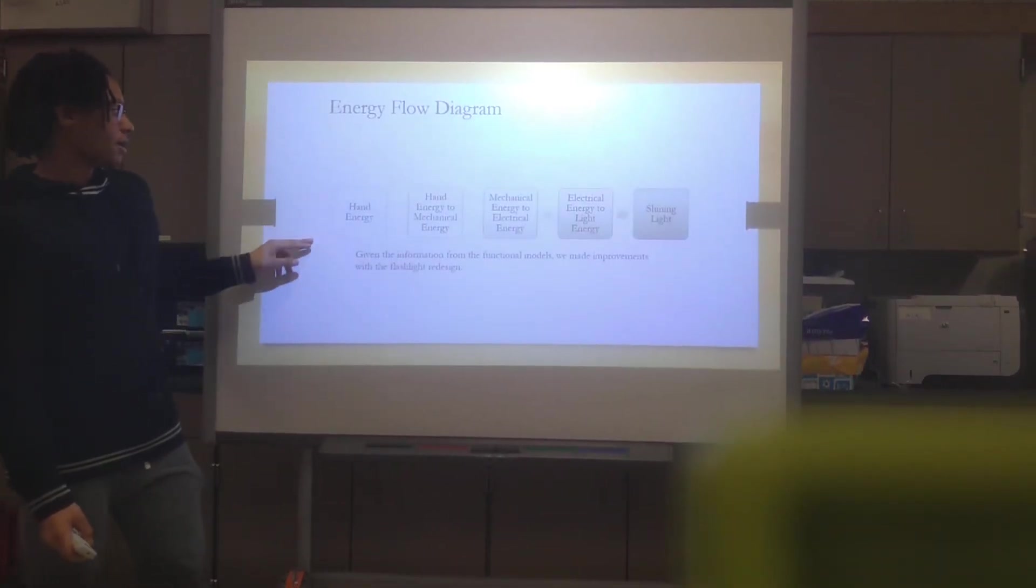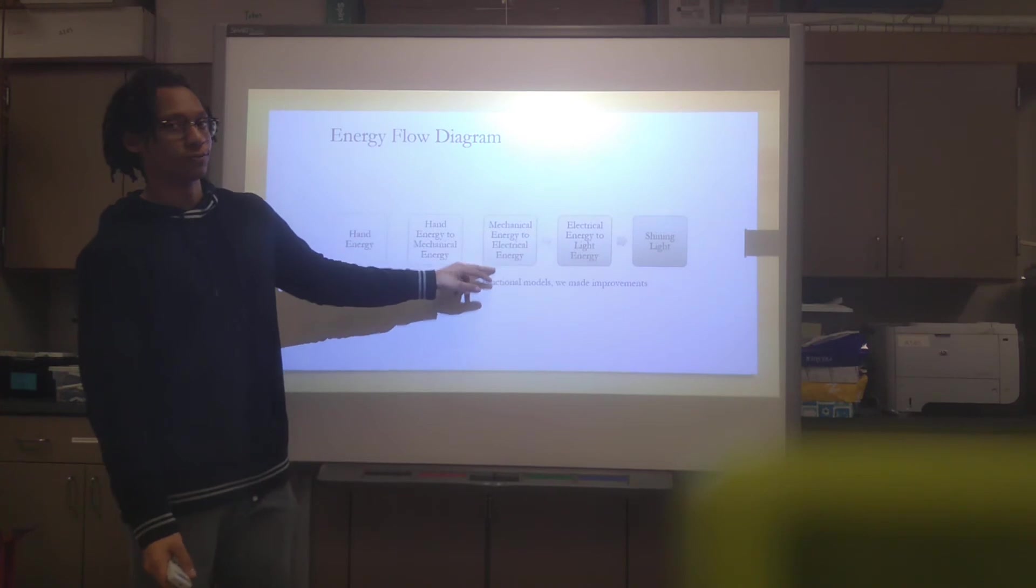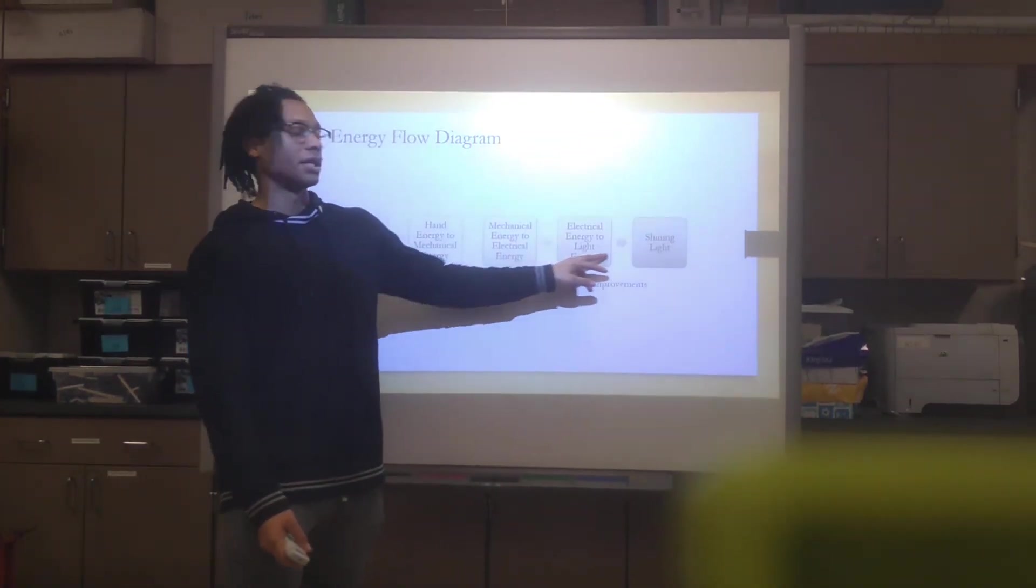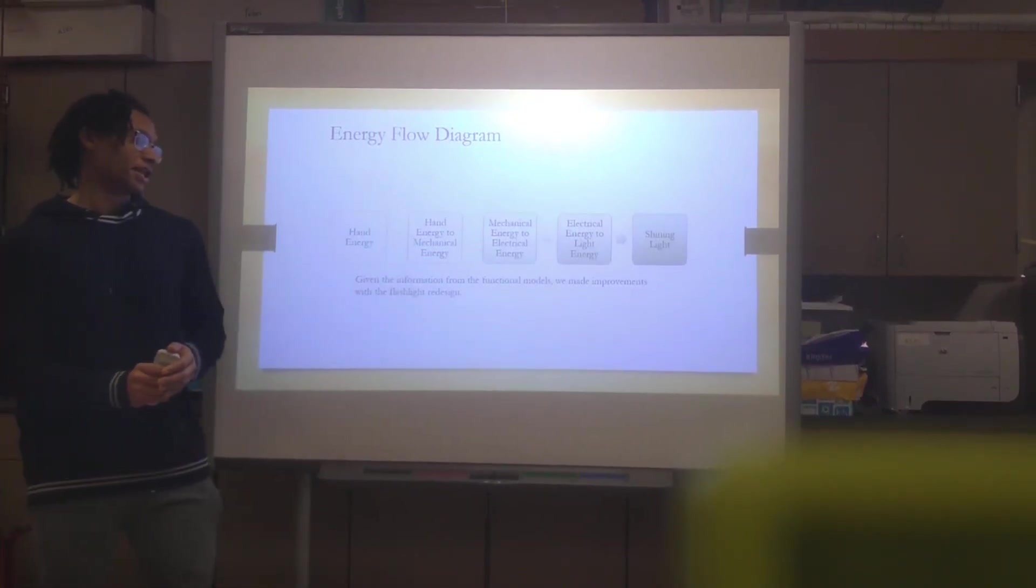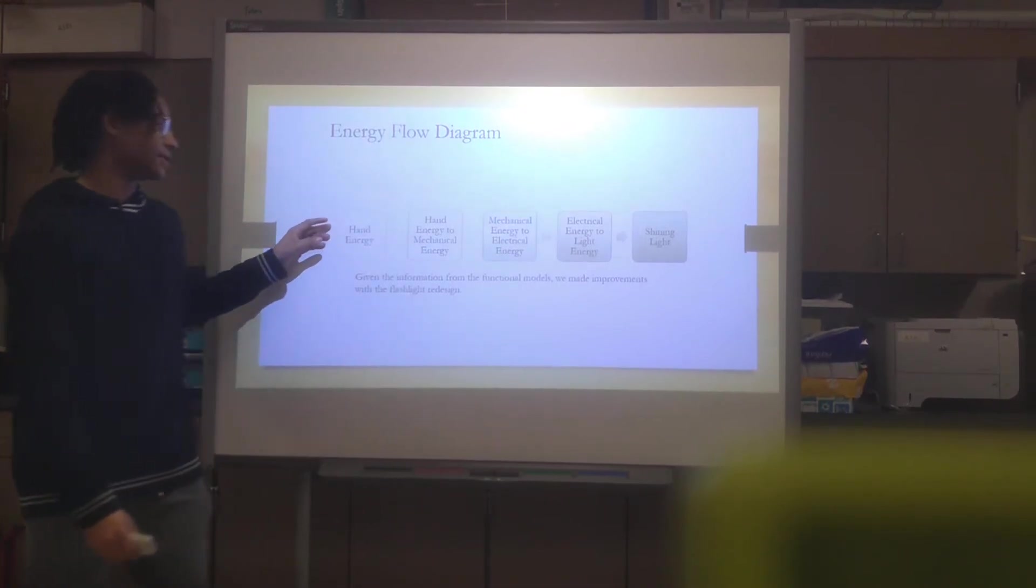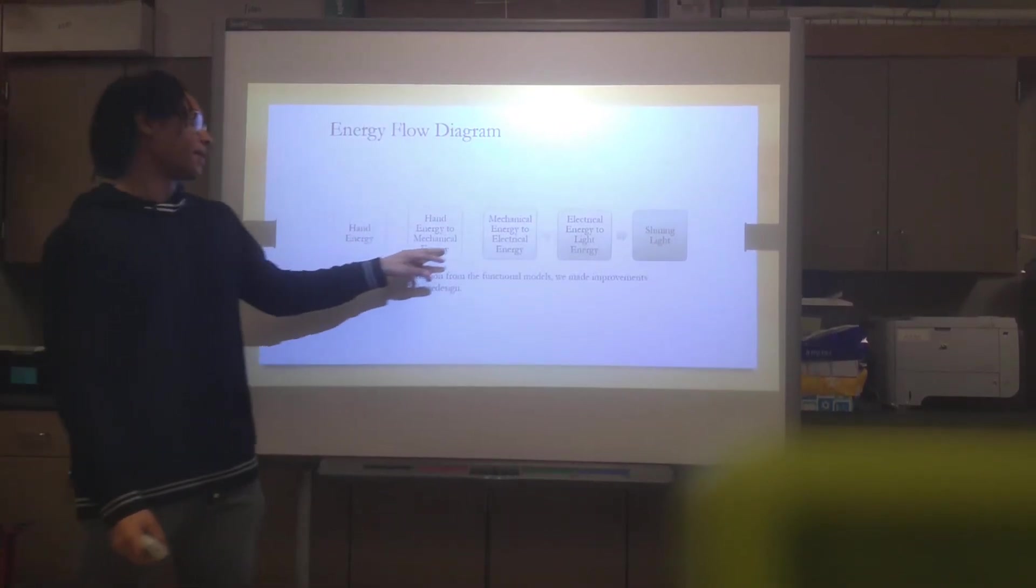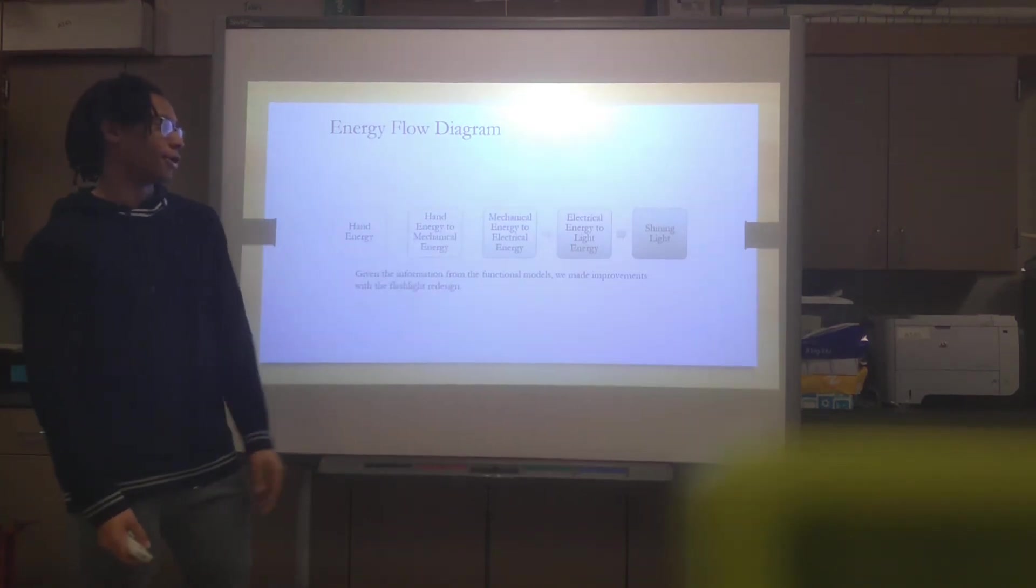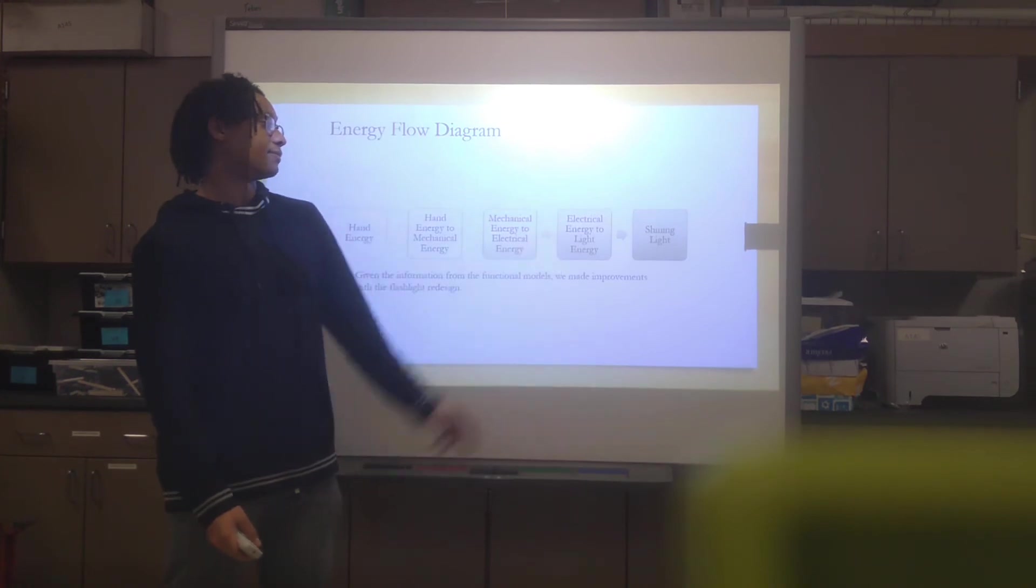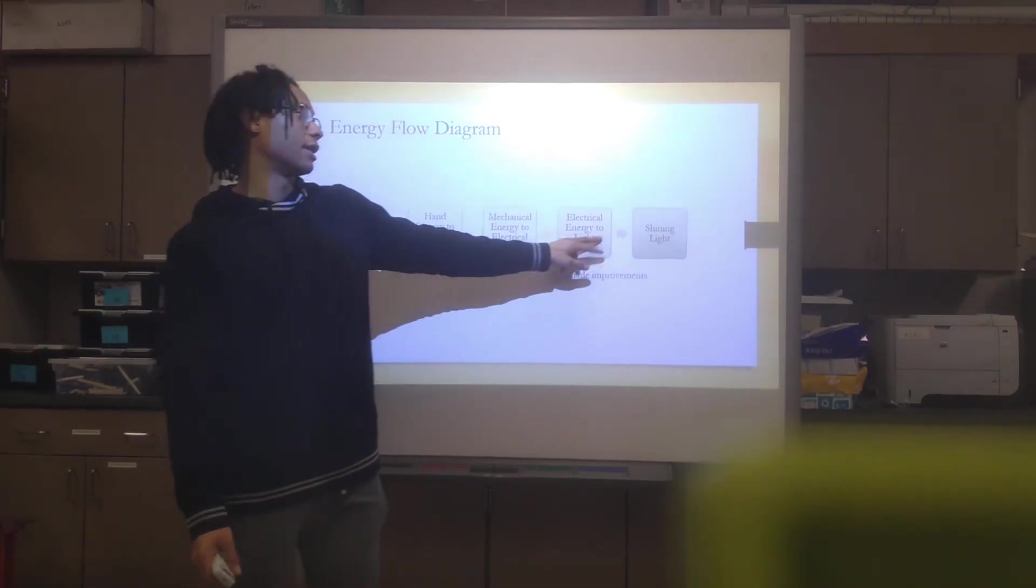Energy flow diagram. It starts off with your hand energy. What you did is transfer to mechanical energy, mechanical to electrical, electrical to light energy, and then shining light. Given the information from the functional models, we made improvements with the flashlight redesign. We know that you're going to use your hands to produce mechanical energy, so we brought hand grips so you can better do so. And then mechanical to electrical energy, we changed the gear ratio so you're using less turns to produce more electricity. Electrical to light energy, we're using LED bulbs so you're using less electrical energy. And that's for our shining light.